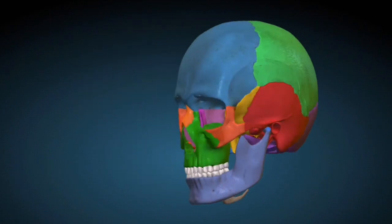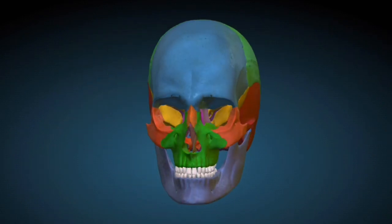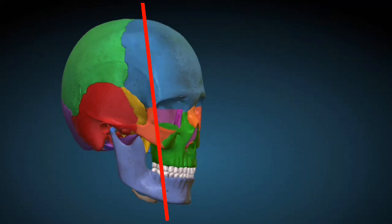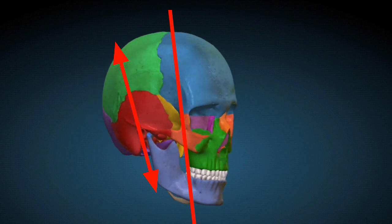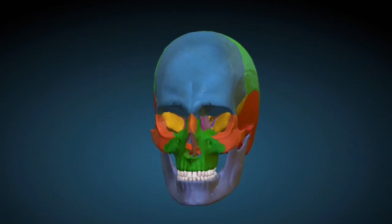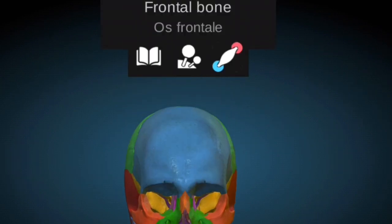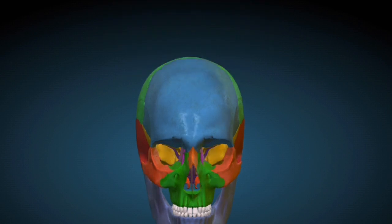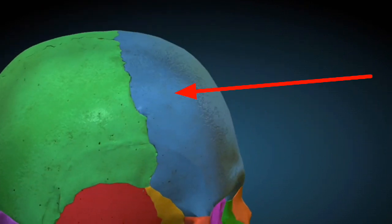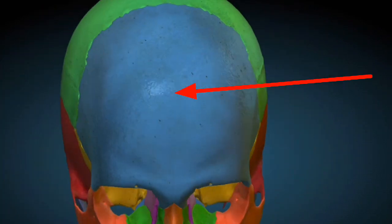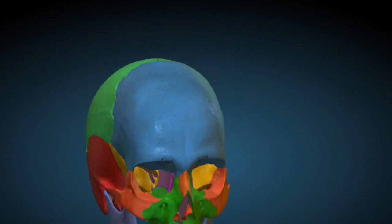This is a general overview of the human skull. The human skull is divided into two portions: the cranial part and the facial part. The facial bones include the frontal bone. The frontal bone is present on the front side, or the anterior aspect, of the skull. It is a large bone which mainly protects the brain.